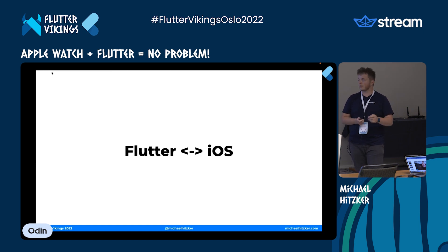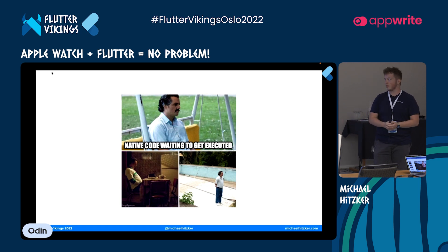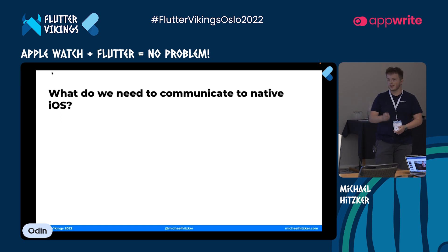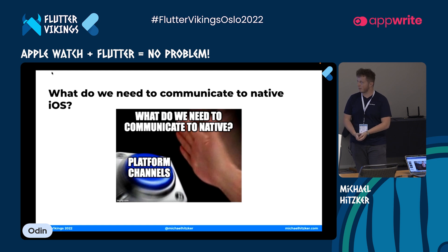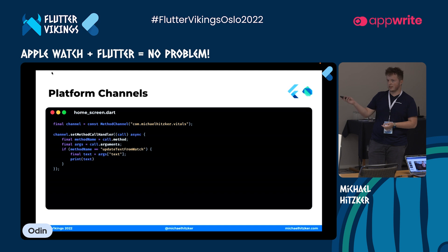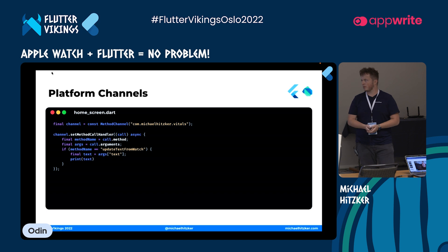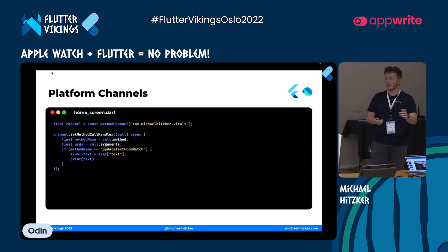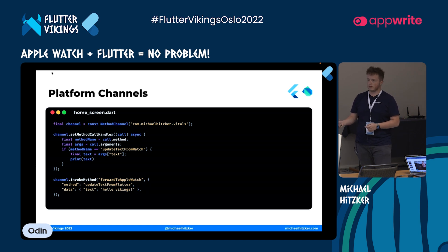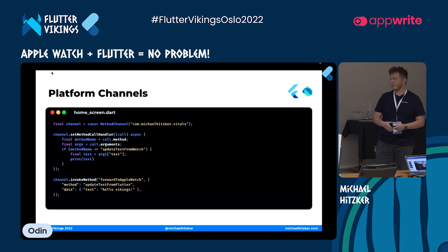Now the cool part with Flutter and iOS. The native code is just sitting there doing nothing, so to communicate with it we use platform channels — most of you have probably heard of them. We initialize a channel and pass it a name. In this demo the app is called Vital. We do the basic platform channel setup with a method call handler. The code in there gets called whenever we call the channel from the native side. We can also invoke a method to send to the native side using channel.invokeMethod. The method name 'forwardToAppleWatch' tells the app to forward the payload to the Apple Watch.